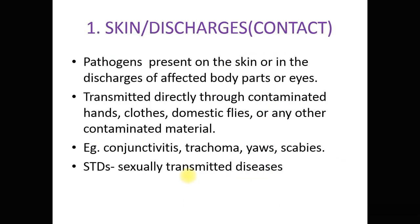The first source is skin discharges and the mode of transmission is via contact. The pathogen is present in the skin or is discharged from the patient through body fluids or from the eyes. The pathogen is transmitted through contaminated hands, clothes, domestic flies, or any other contaminated material. Examples include conjunctivitis, trachoma, yaws, and scabies. STDs — sexually transmitted diseases — also come under this category, transmitted via discharges from the genitals or through contact with the genitals.